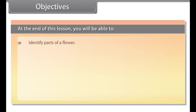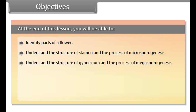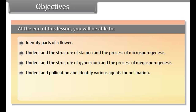Objectives. At the end of this lesson, you will be able to: identify parts of a flower; understand the structure of stamen and the process of microsporogenesis; understand the structure of gynoecium and the process of megasporogenesis; understand pollination and identify various agents for pollination; understand the types of fertilization; and also understand the development of endosperm, embryo, seed and fruit.